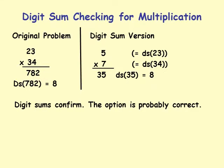Digit sum confirms the option is probably correct. We say 'probably' because matching digit sums is a necessary condition but not a sufficient condition — we have already seen that matching digit sums can accompany an incorrect answer.